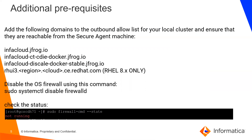There are more prerequisites when executing mappings with local clusters. Add the following domains to the outbound allow list and ensure they are reachable from the secure agent machine: forcloud.jfrog.io, forcloud.cdctd.ie, docker.jfrog.io, and forcloud.di-scale-docker-stable.jfrog.io. These are needed because we will be pulling images from JFrog repositories. Also, you need to disable the OS firewall — execute the command below and check the status to confirm the firewall is disabled.